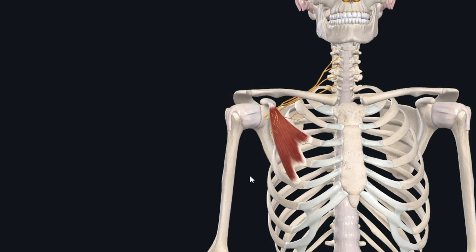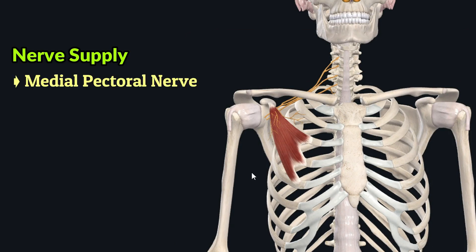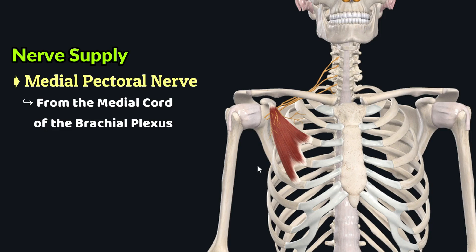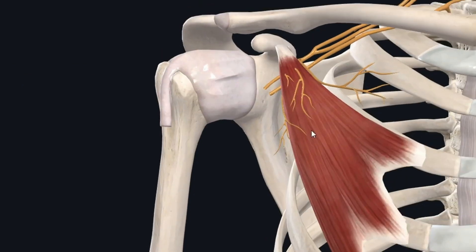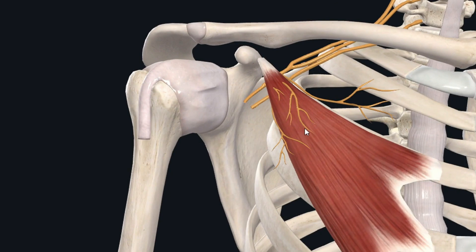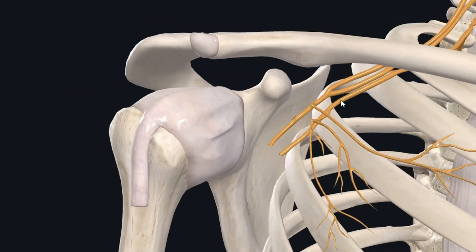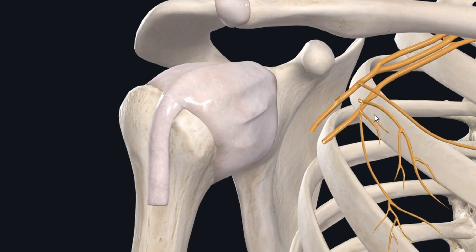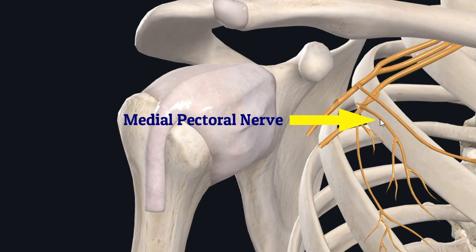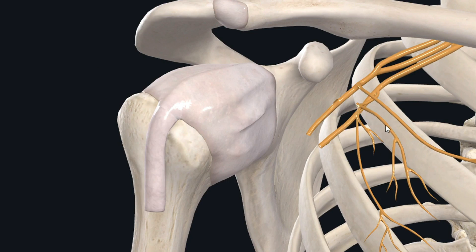The pectoralis minor muscle is supplied by the medial pectoral nerve, which originates from the medial cord of the brachial plexus. These are the pectoral branches of the medial pectoral nerve. The medial pectoral nerve underlies this muscle — with the muscle removed, you can see the medial pectoral nerve originating from the medial cord of the brachial plexus and giving off pectoral branches to the pectoralis minor.